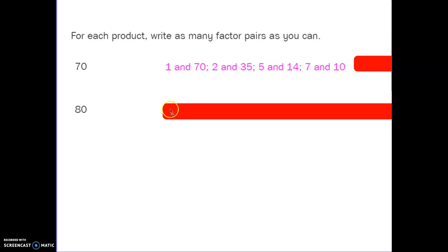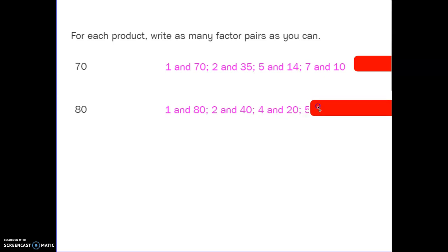And for 80, the first one's going to be 1 and 80, 2 and 40, 4 and 20, 5 and 16, 8 and 10. That one has a lot of factor pairs.